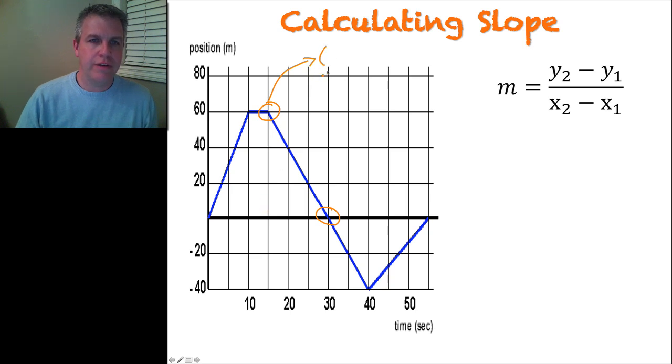Our point is 15 and 60. Okay, and this point over here is 30 and 0. Okay, so this is our second value. This is our first value up here.